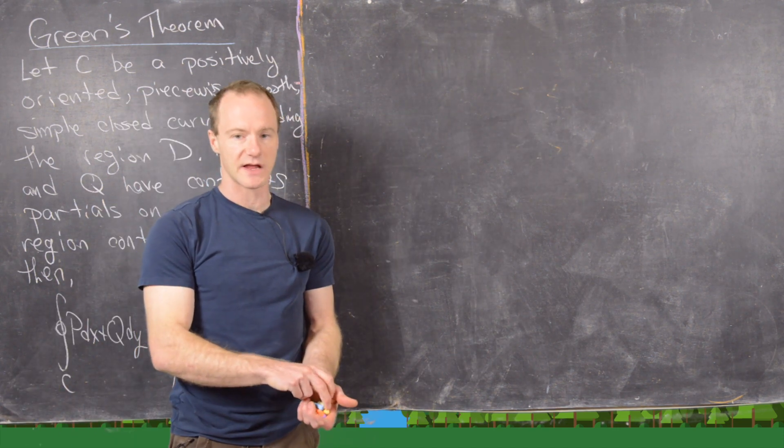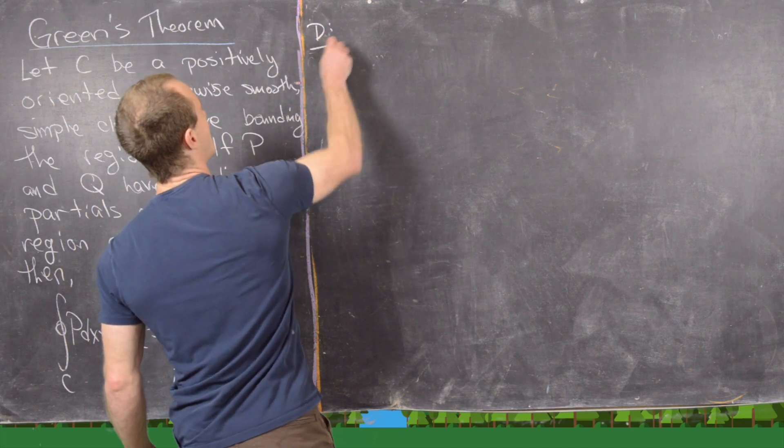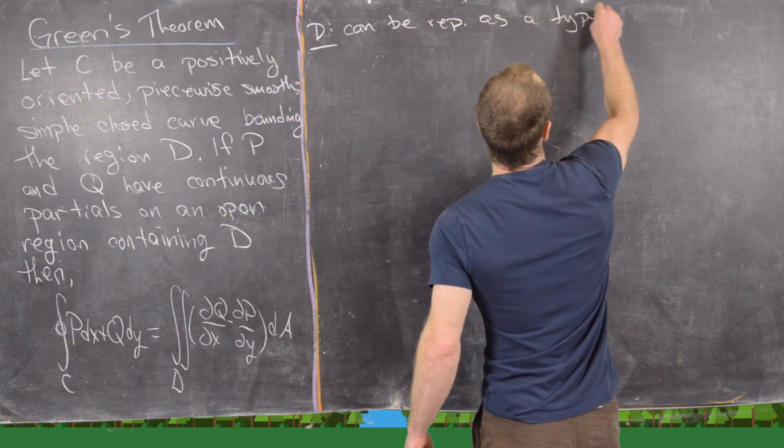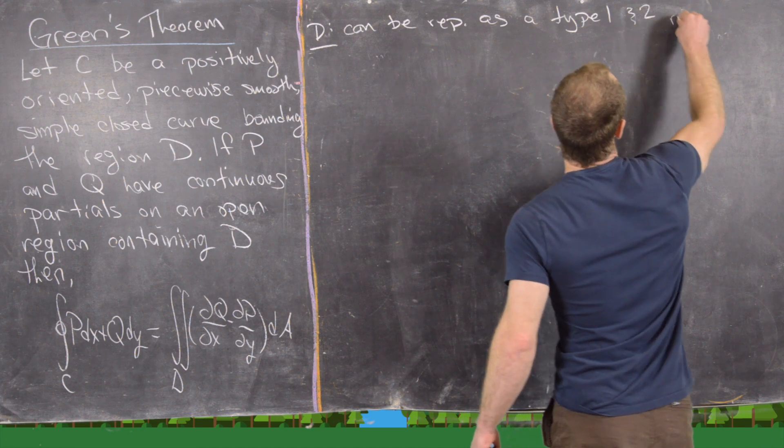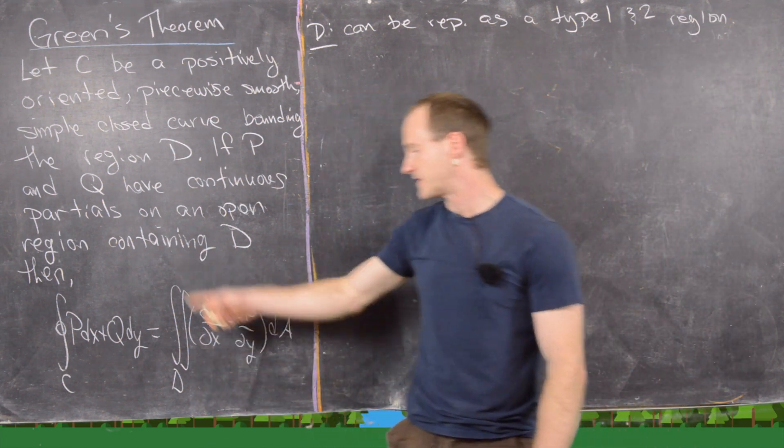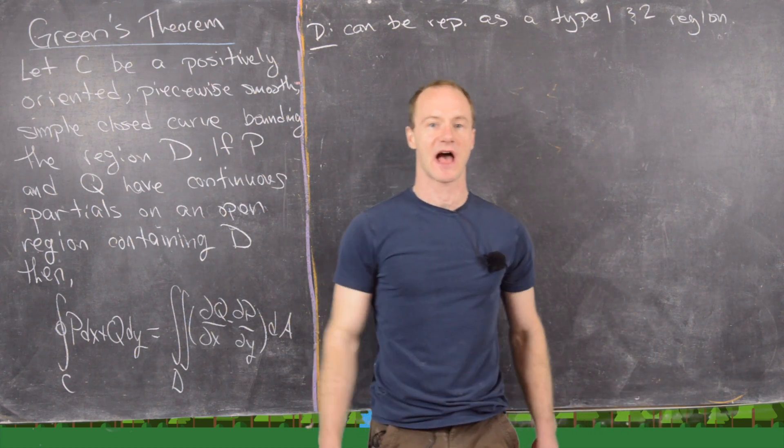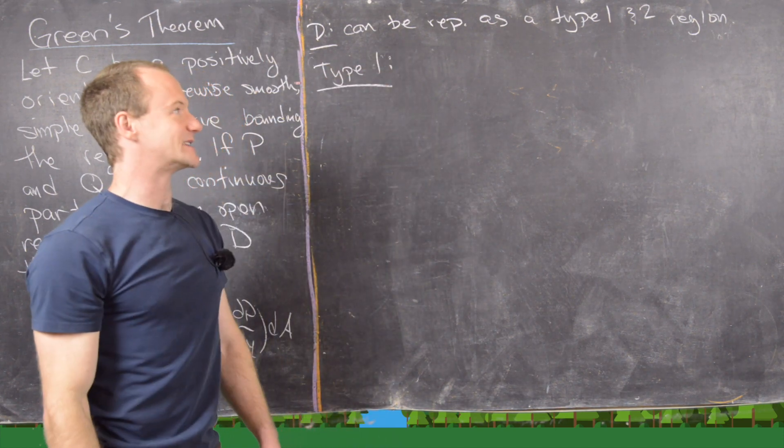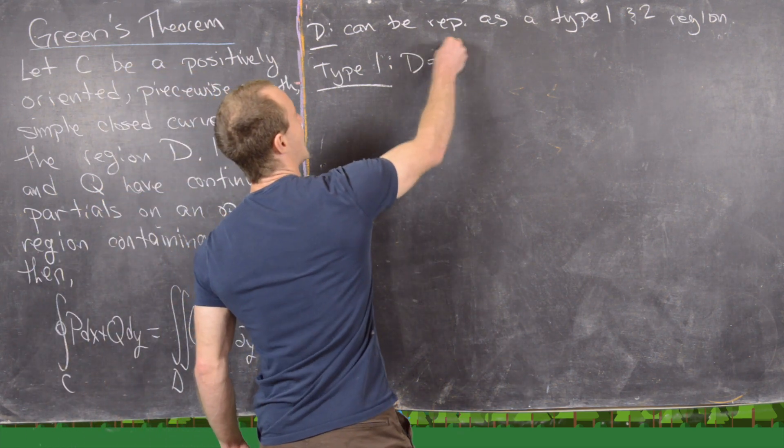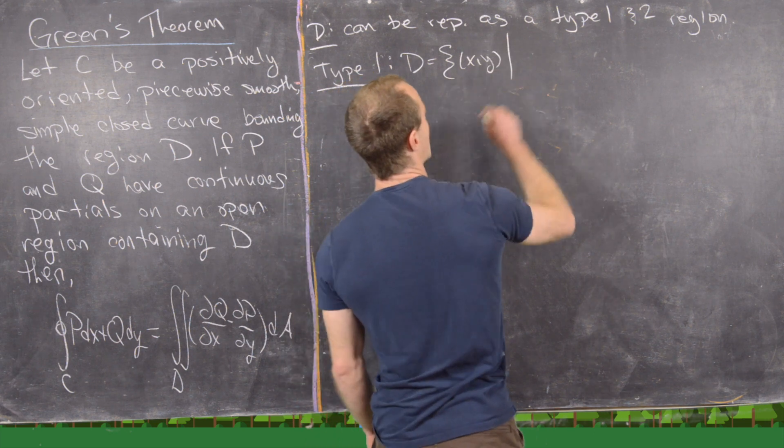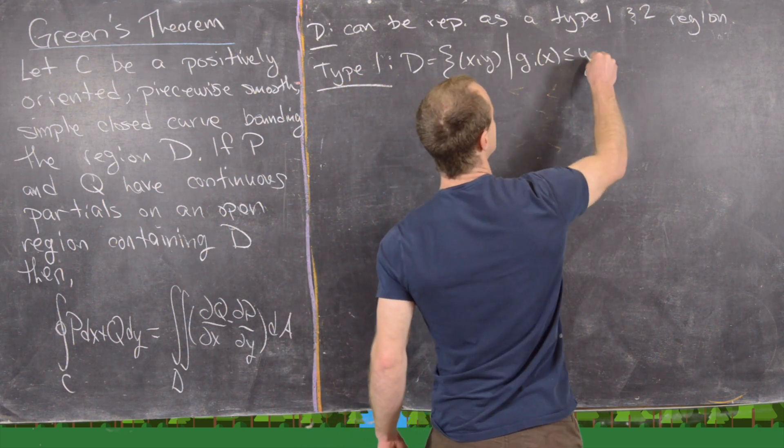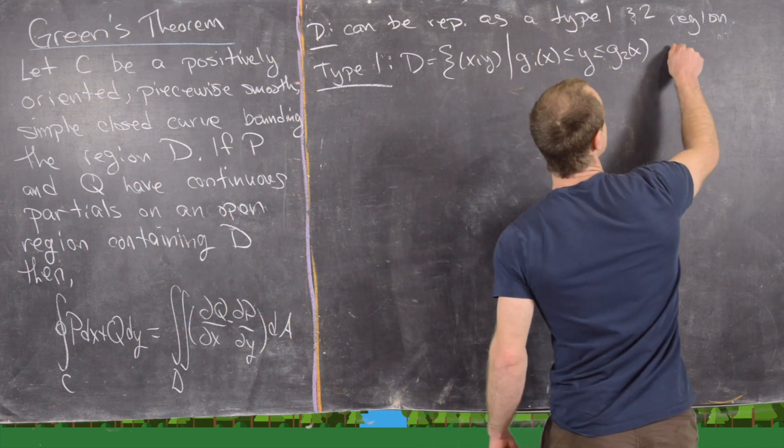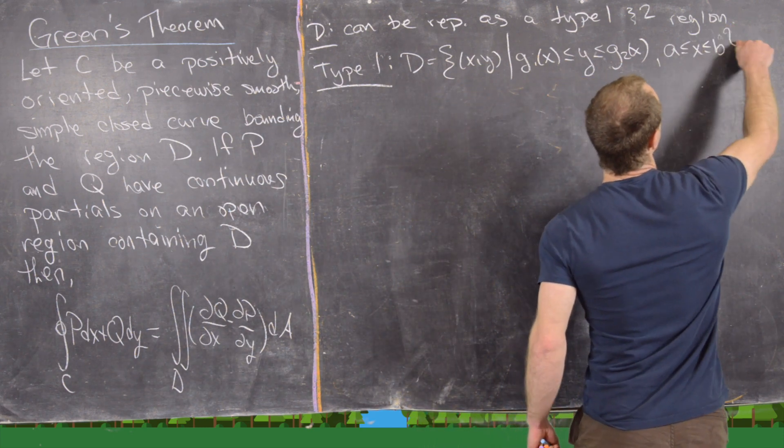So now let's go ahead and clean up the board and then we'll do a very special case of the proof. So now we're going to look at a very special case of the proof of this theorem. And that case is the following. So D can be represented as a type 1 and 2 region. And you see we'll get like half of this equality from the type 1 region and the other half from the type 2 region. So let's first look at representing D as a type 1 region, which means D can be written as the coordinates x and y. And here y is between two functions of x. And then x is between two numbers a and b.